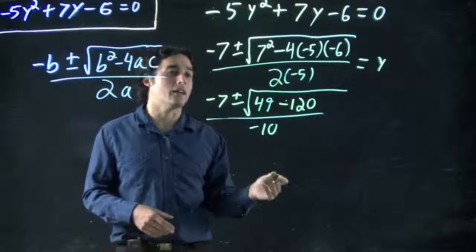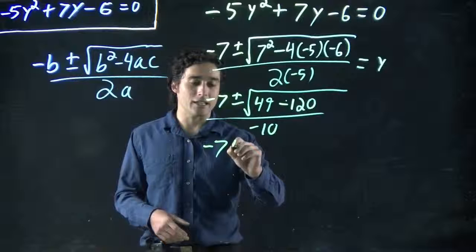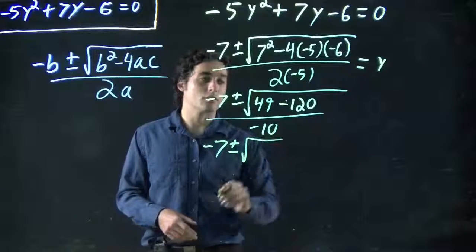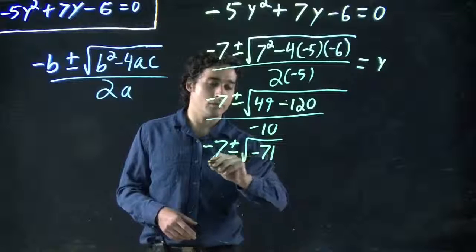We haven't talked about it yet, but 49 minus 120. Let's see what happens in the next step. Minus 7, plus or minus, the square root of minus 71, all over minus 10.